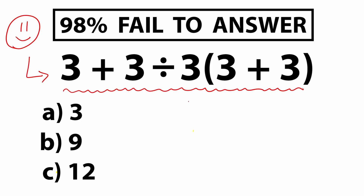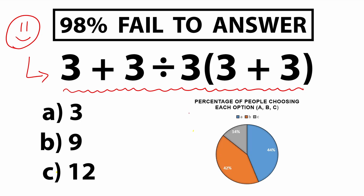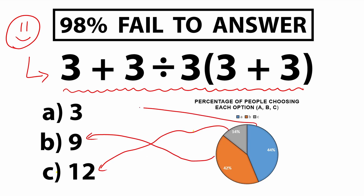Before the video I made a quick poll, and here is the result. You can see the percentage of people choosing each option — A, B, or C. So 14% of people chose option C, 42% of people chose option B, and 44% of people chose option A.